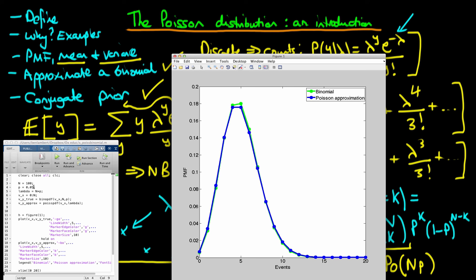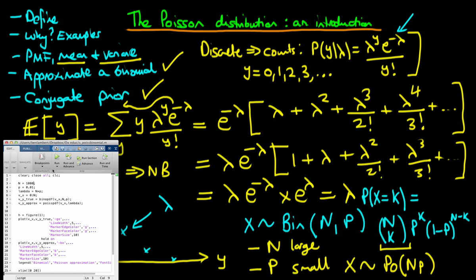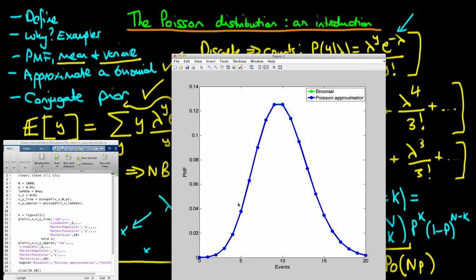If we decrease p further to 0.01 and increase n up to 1000, the value of lambda is now 10. Rerunning this, we see that the exact binomial values are very, very well approximated by the Poisson approximation.